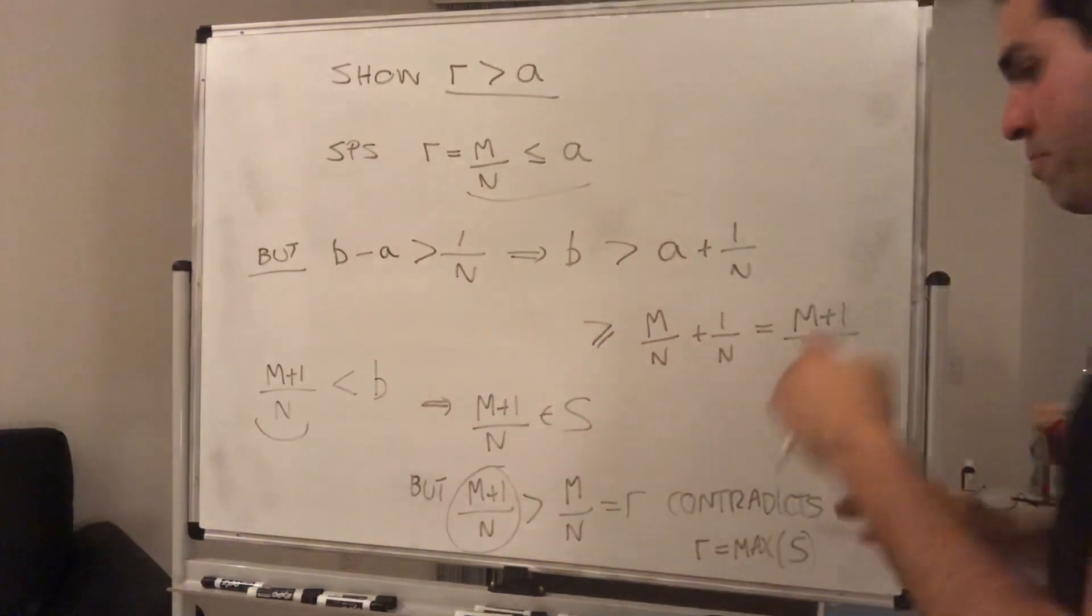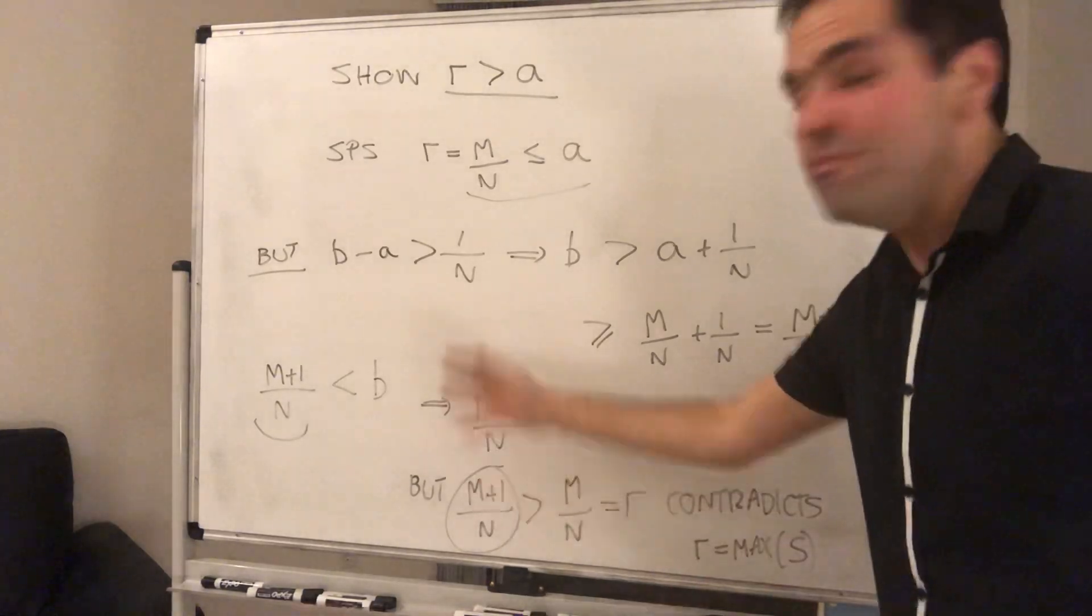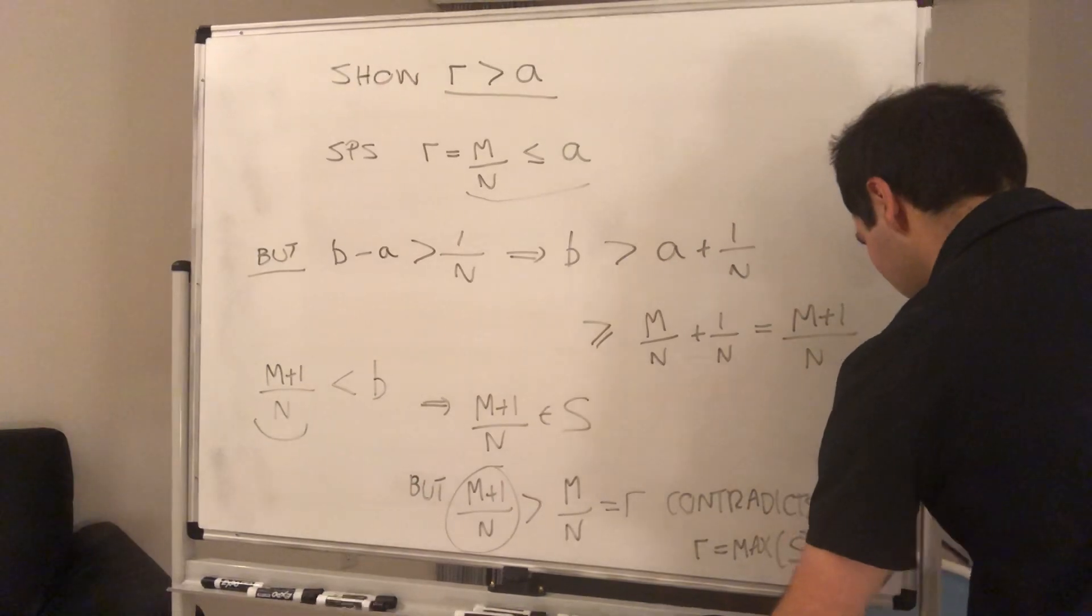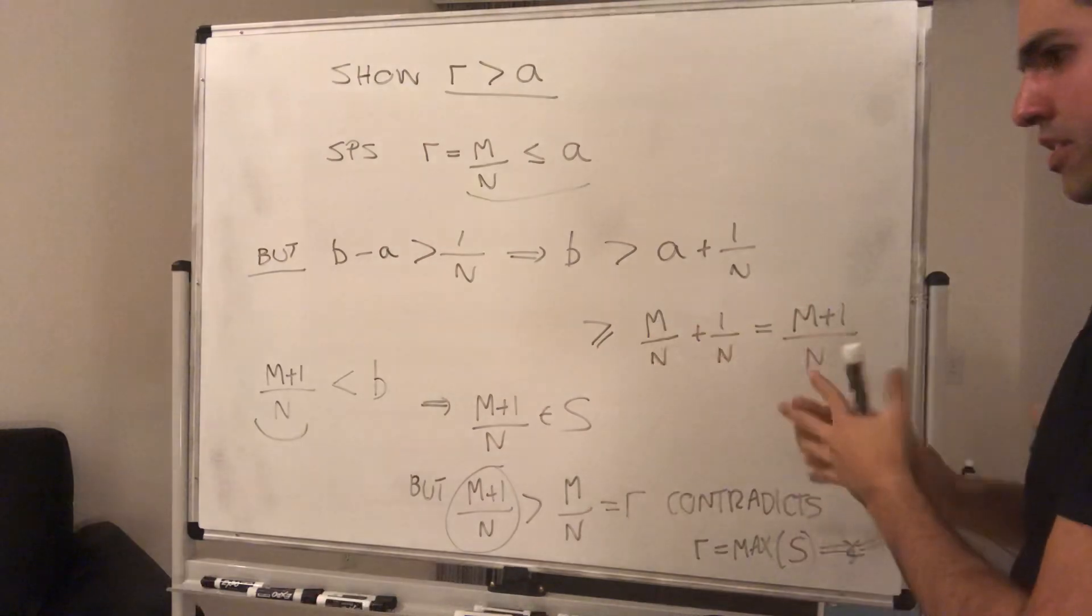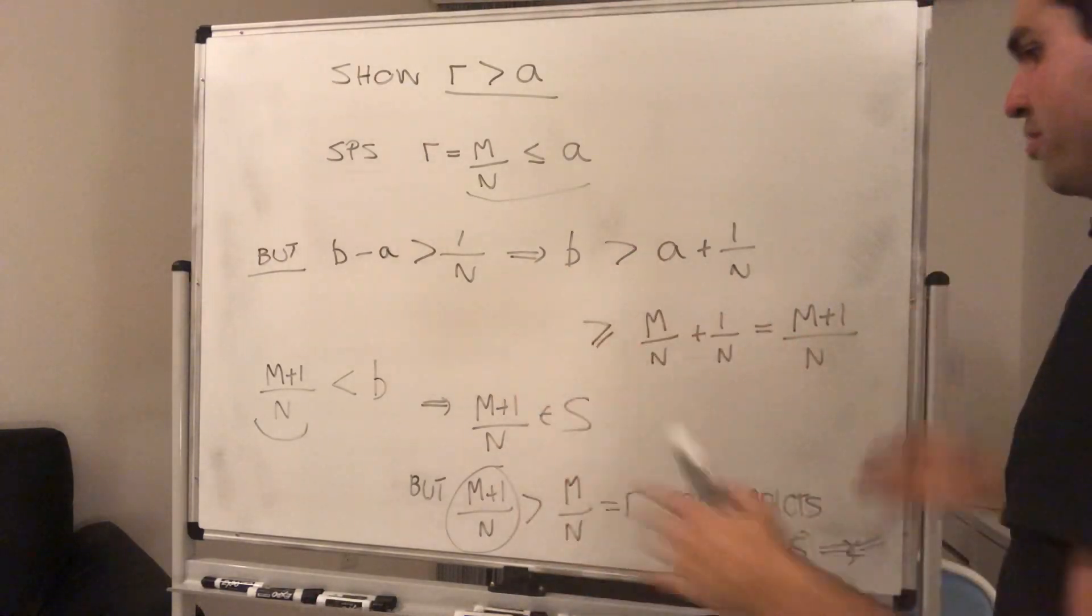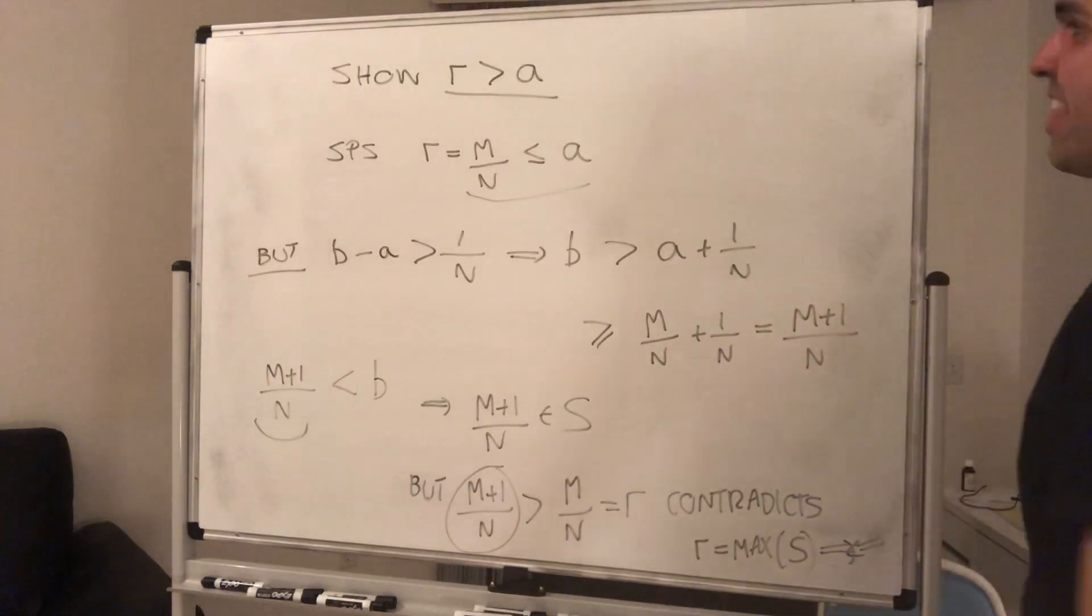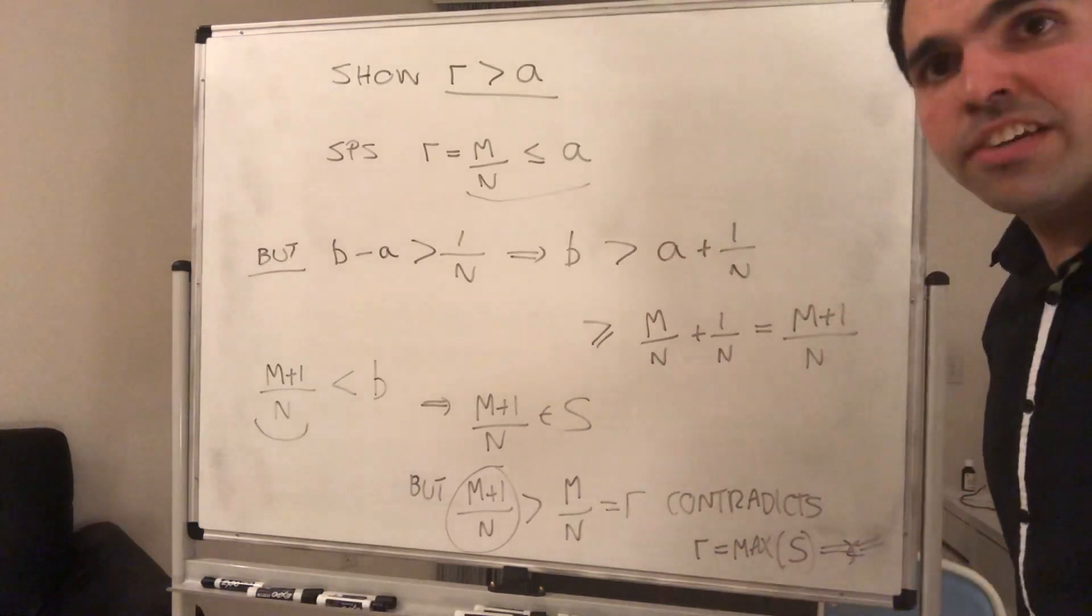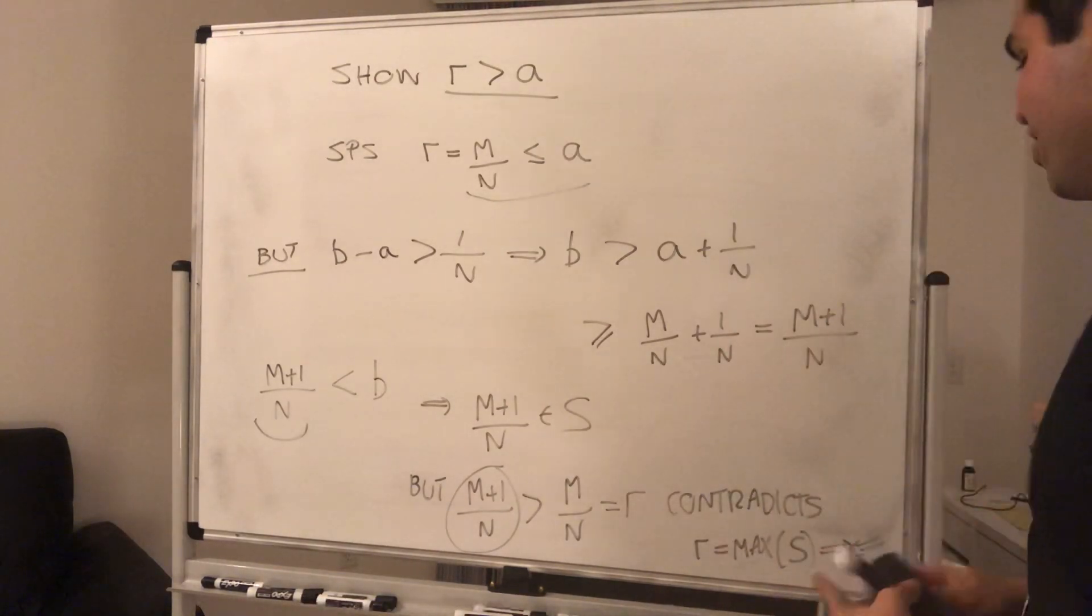Again, we said the biggest fraction, if you want, in S is m over n, but you just found a bigger fraction that is in S. And that's the problem. And again, essentially it uses the fact that they're 1 over n apart. So, you know, that's why you can always find a fraction r in there. So in particular, what have we shown? So this contradicts what? The fact that r is less than or equal to a. So r is bigger than a. So r is a fraction that's between a and b. And that's exactly what we wanted to show.